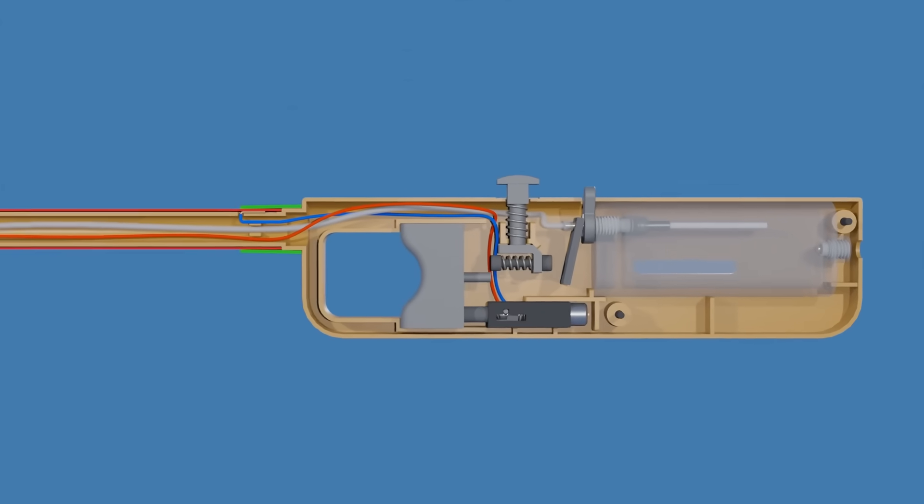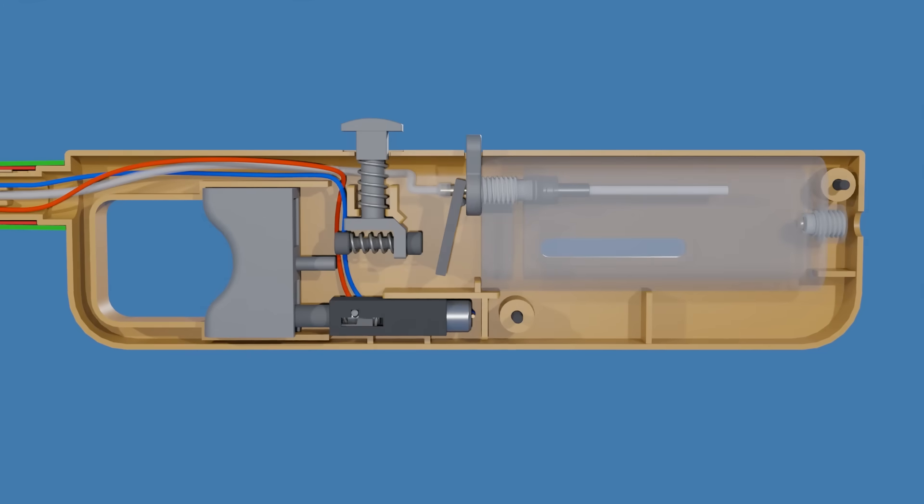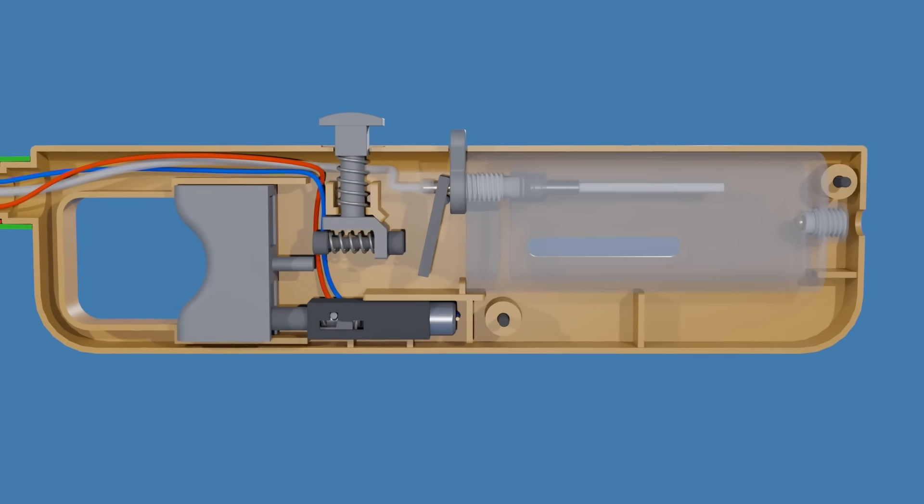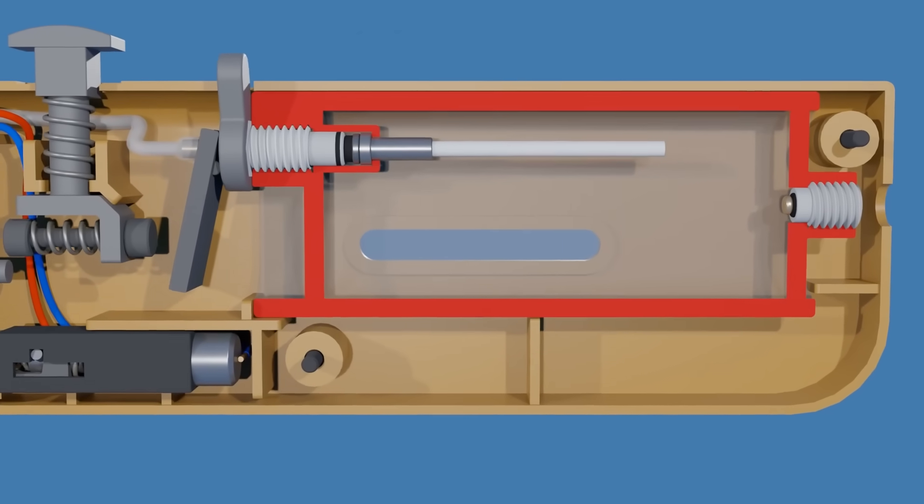Let's first look at how the gas is released from the lighter. This is the fuel reservoir, typically filled with butane. Butane is stored under high pressure within the reservoir, which causes it to exist in its liquid form.